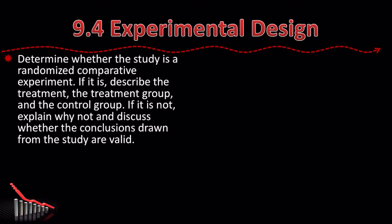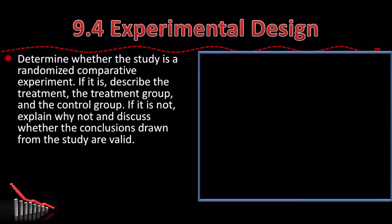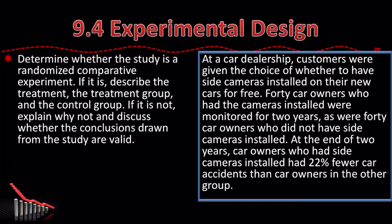Determine whether the study is a randomized comparative experiment. If it is, describe the treatment, the treatment group, and the control group. If it's not, explain why not, and discuss whether the conclusions drawn from the study are valid. So at a certain car dealership, customers were given a choice of whether to have side cameras installed in their new cars for free. Forty car owners who had the cameras installed were monitored for two years, as were forty car owners who did not have the side cameras installed. At the end of the two years, car owners who had side cameras installed had 22% fewer car accidents than car owners in the other group.